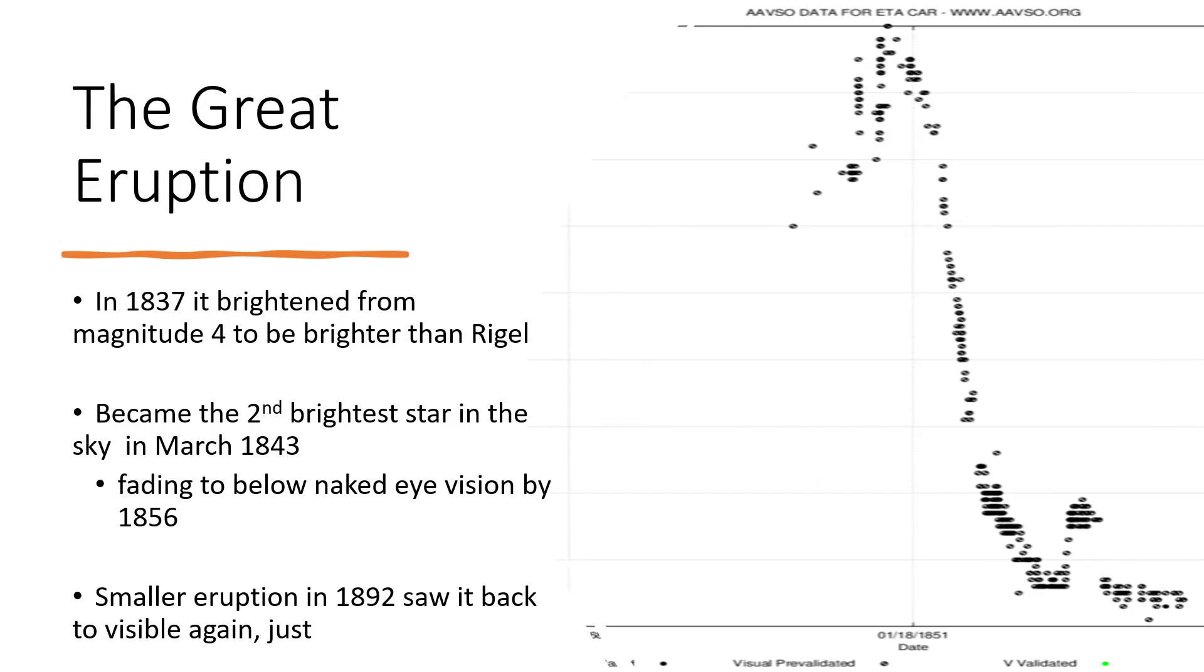By 1843 it was at its peak and dropped by 1856 to below naked eye visibility. You couldn't see it at all at that stage. But then in 1892 it came back to being visible, just at magnitude six, because there was a second smaller outburst, again shown as that second little peak on the light curve there.